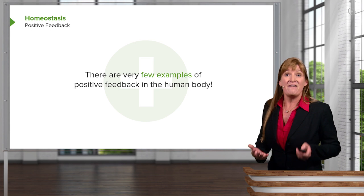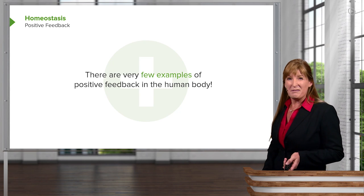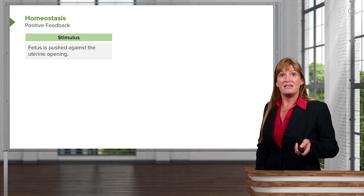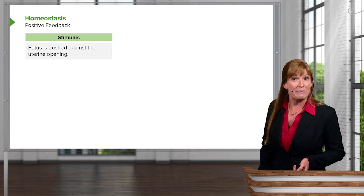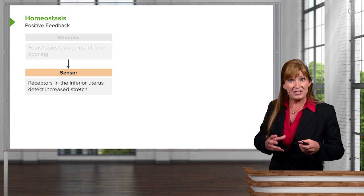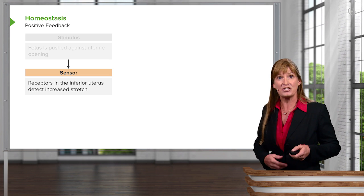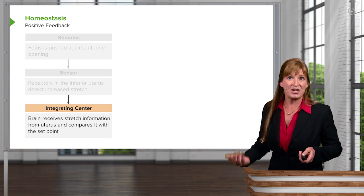There are very few examples of positive feedback in the human body. One of them is blood clotting. Another one we'll look at here is the event of birth or parturition. When a fetus is ready to be born, it pushes up against the cervix, and the cervix is stretched, and the sensory muscle fibers within the cervix will detect that stretching, and that stimulus will be sent to the hypothalamus and integrated.